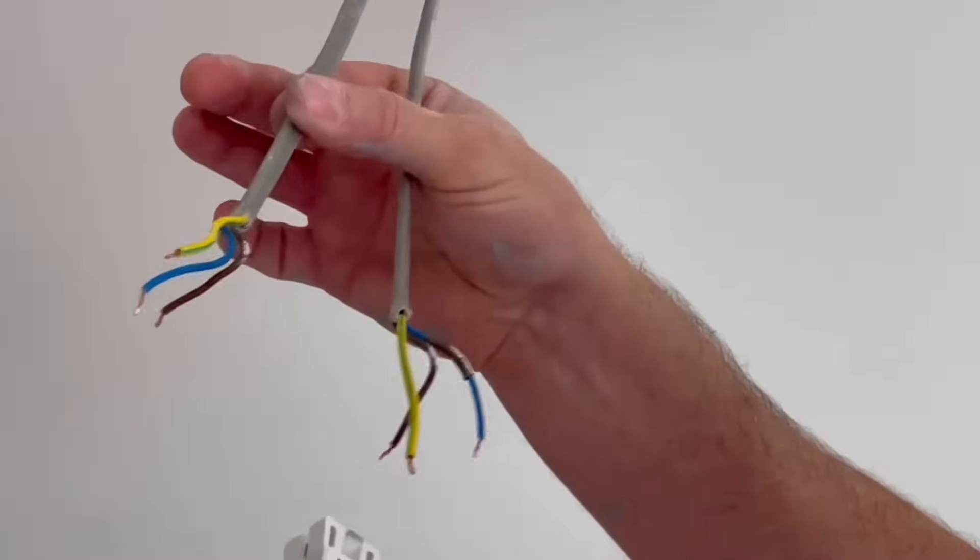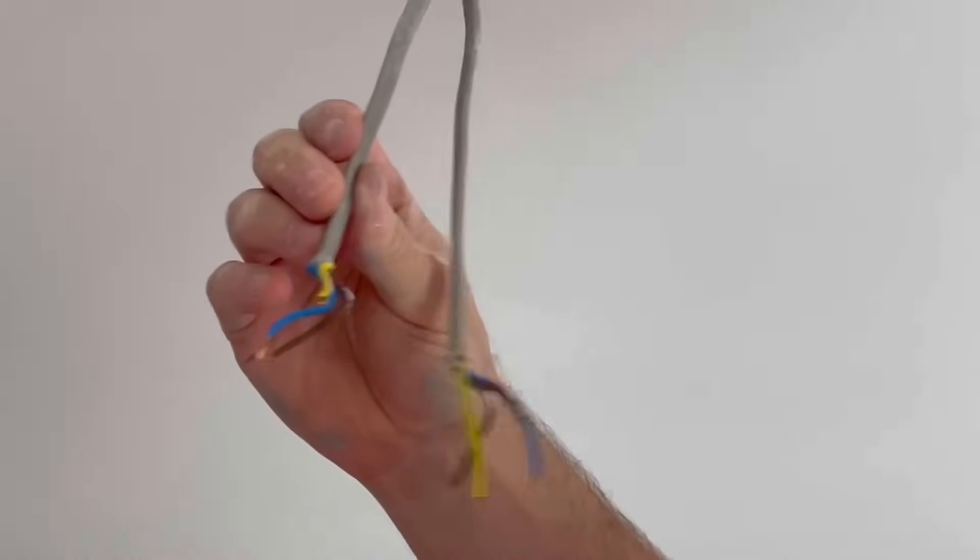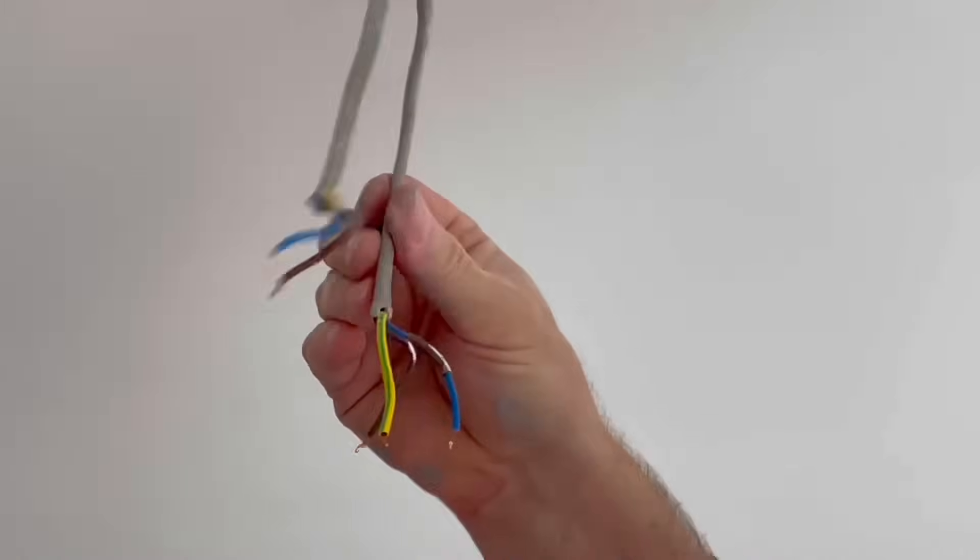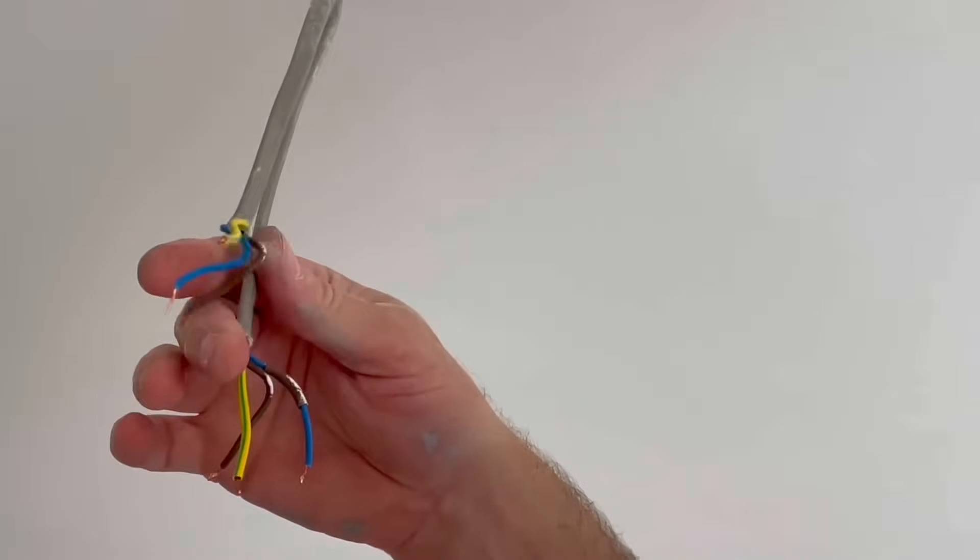So this is what they call the power so this is our permanent line, neutral and CPC coming in. There is no one going out and this goes down to our switch which brings the permanent line, switching line and CPC back.